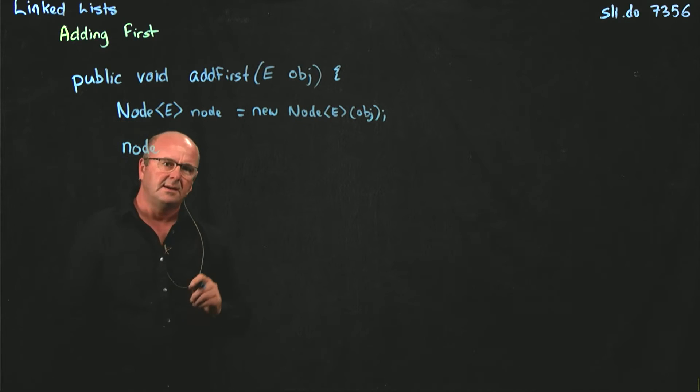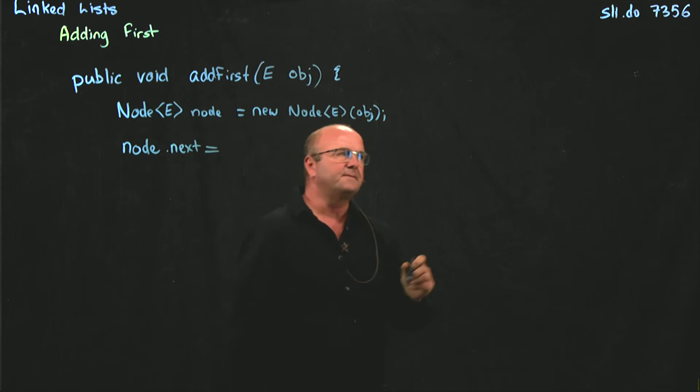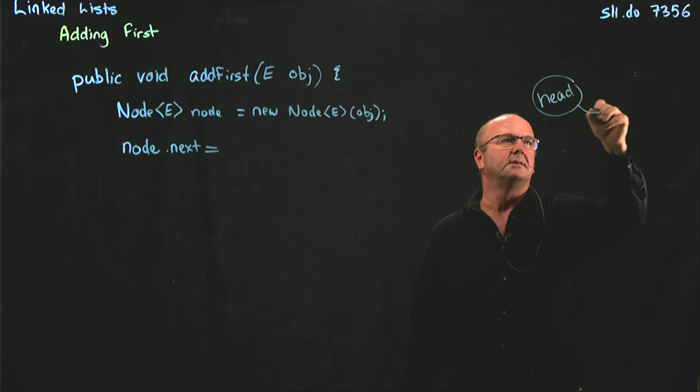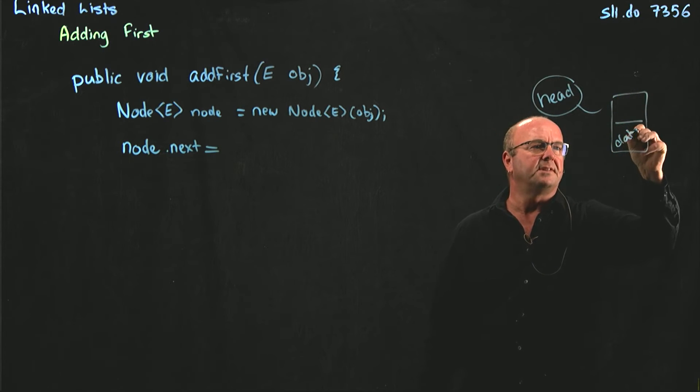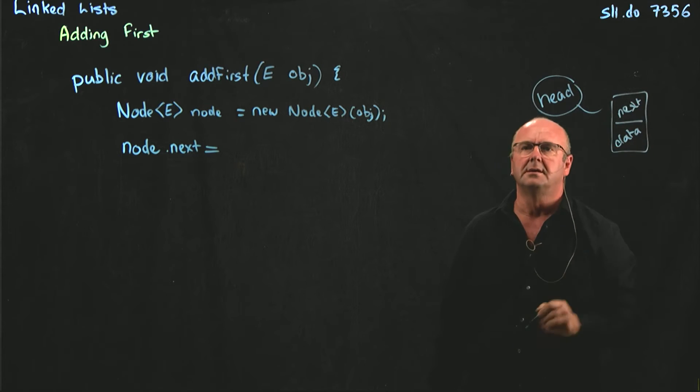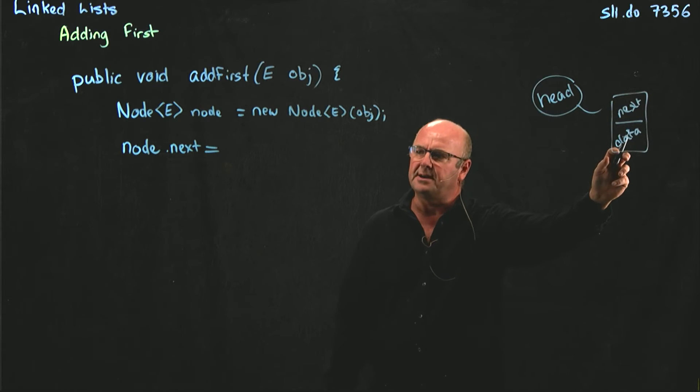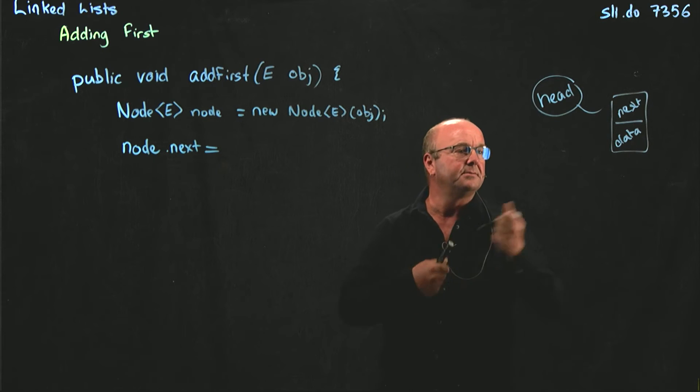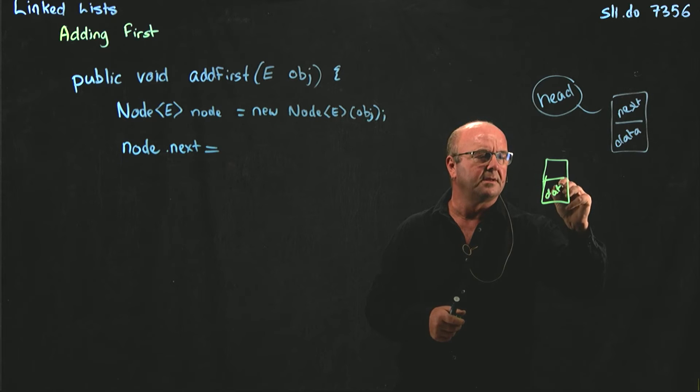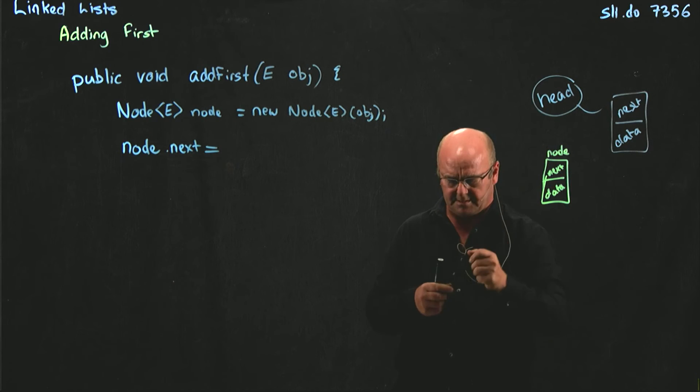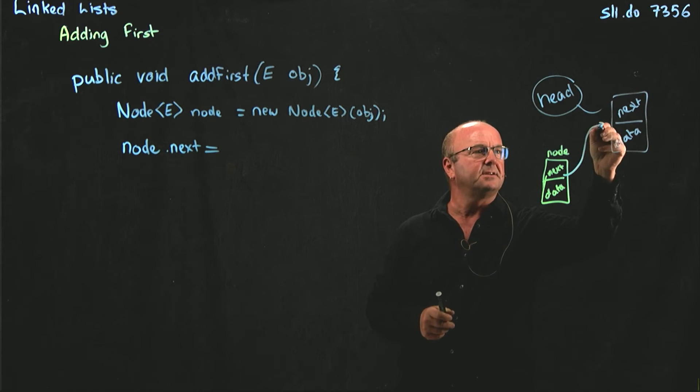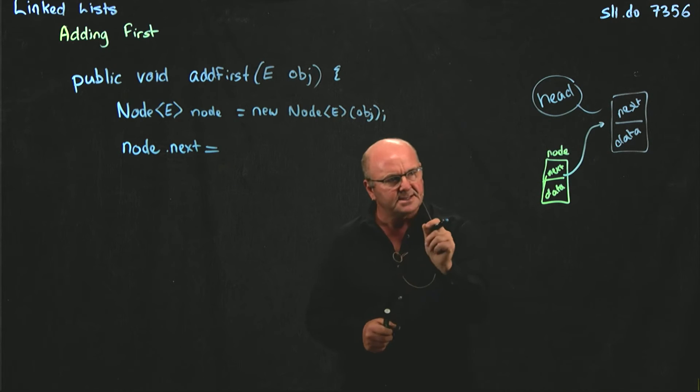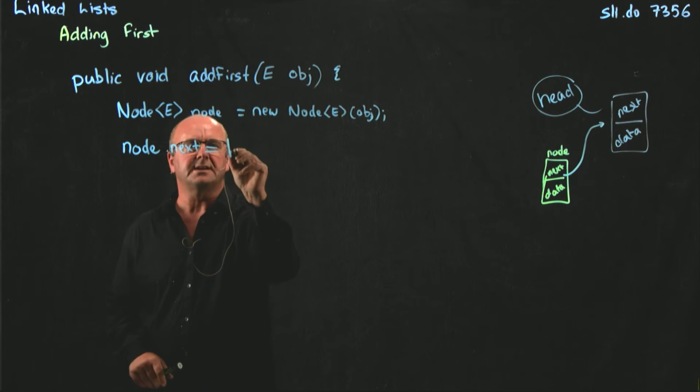So the critical order here is the first thing we have to do is take our new node and say node.next is going to point to the first node. So here's head, here's our node that exists already with data and next. So the way that we find out where that node is, is we just use head, right? Because head points to the first node. So we've got our new node, and what we're going to do is we're going to say node.next is going to point to the same node that head is pointing to, the same place in memory that head is pointing to. So node.next is equal to head.